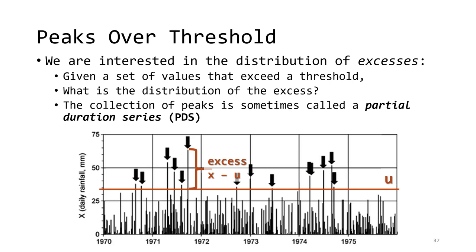For all of these floods that exceed some threshold used to define large events, we can build a model for how much the values exceed the threshold. The amount that the peak exceeds the threshold is called an excess, and it is simply the value of the peak, x, minus the value of the threshold, u. They'll have a minimum value of zero, and most of the values are closer to zero than a large value. In hydrology, the peaks over threshold model is also sometimes called a partial duration series, or PDS.